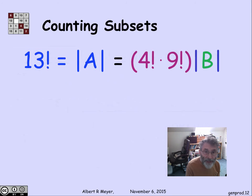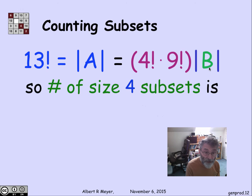According to the division rule, 13 factorial, which is the size of A, equals that factor k, 4 factorial times 9 factorial, times the size of B, which is what we wanted to know. B is the set of size 4 subsets. So the number of size 4 subsets is 13 factorial divided by 4 factorial times 9 factorial.